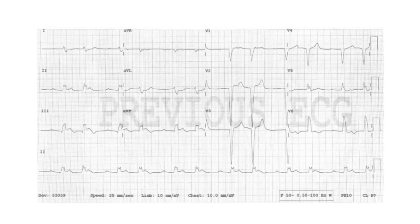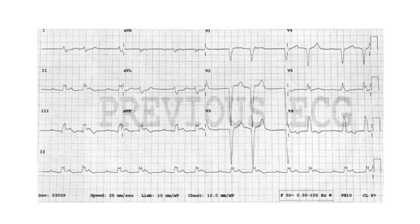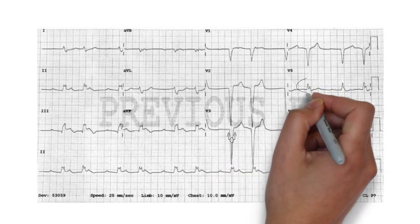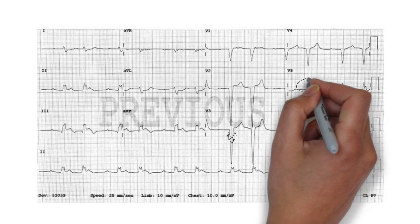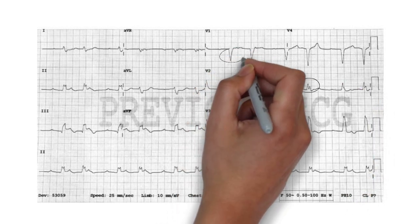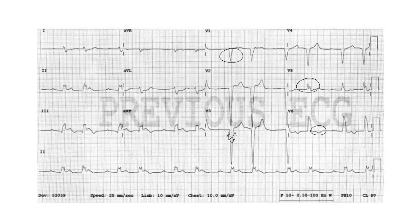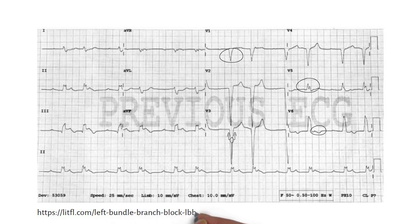Let's try to solve a case together. This is Homer. He is a chronic hypertensive, and this is his baseline ECG. We can see a prolonged QRS duration of greater than 3 small squares, M pattern in leads V5 and V6, dominant S wave in lead V1, and appropriately discordant STT waves. So he is suffering from left bundle branch block, most likely due to his chronic hypertension.